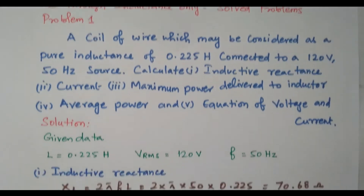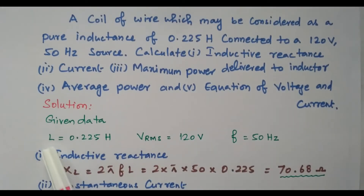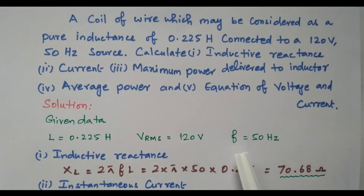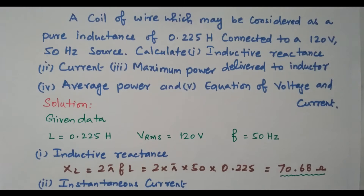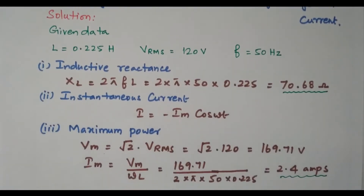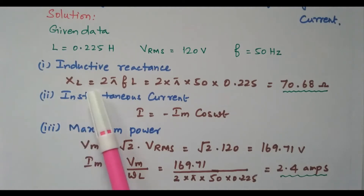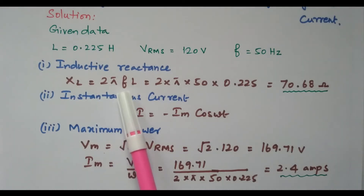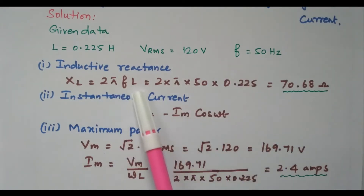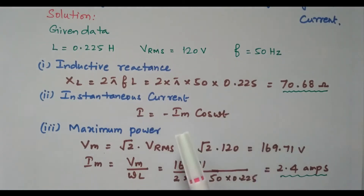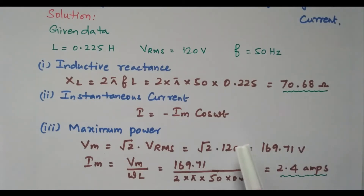First we will see what data is available. The inductor value is 0.225 Henry, RMS value of voltage is 120 volts, and frequency is 50 Hertz. Based on that, first we will find the inductive reactance: XL = 2πFL = 2 × π × 50 × 0.225, which gives us 70.68 ohms.